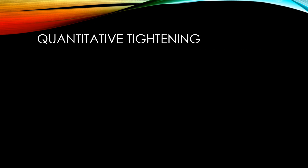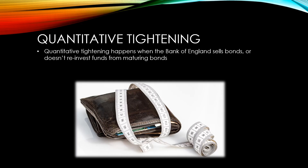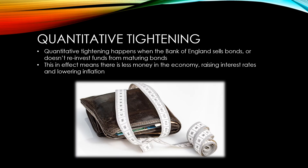Quantitative tightening happens when the Bank of England sells bonds to commercial investors or doesn't reinvest funds from maturing bonds. This in effect means there is less money in the economy, raising interest rates and lowering inflation. Both quantitative easing and quantitative tightening are more effective when markets are stressed, which is why the Bank of England generally uses changes to the base rate and only uses quantitative easing in extreme times like the 2009 financial crisis and the pandemic.